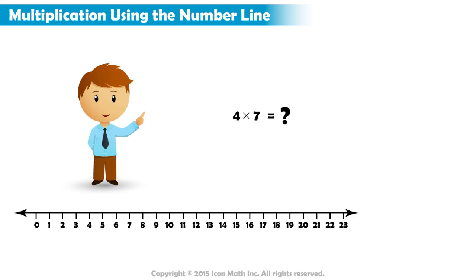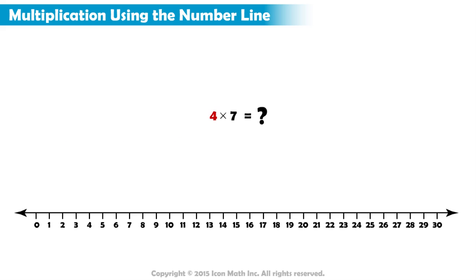Let's start by drawing our number line. Since 4 times 7 is the same as adding 7 to itself 4 times, we can use repeated addition to show multiplication on the number line.